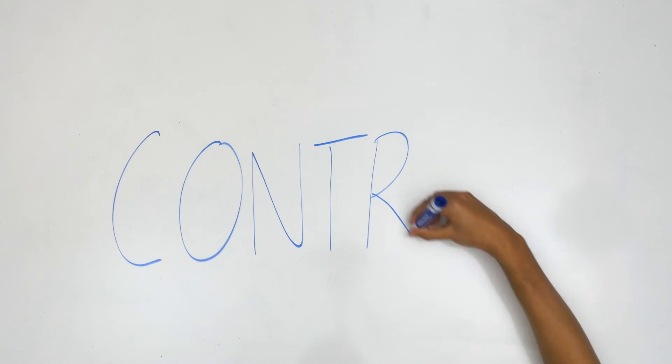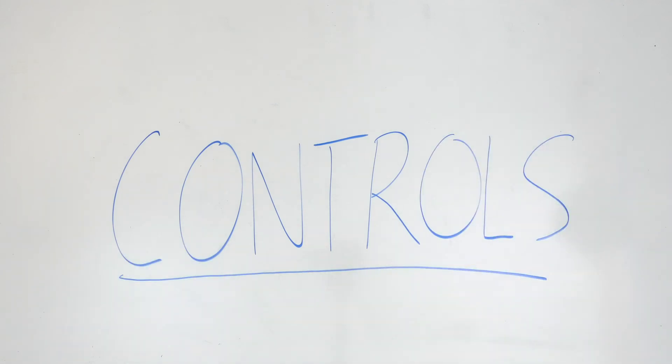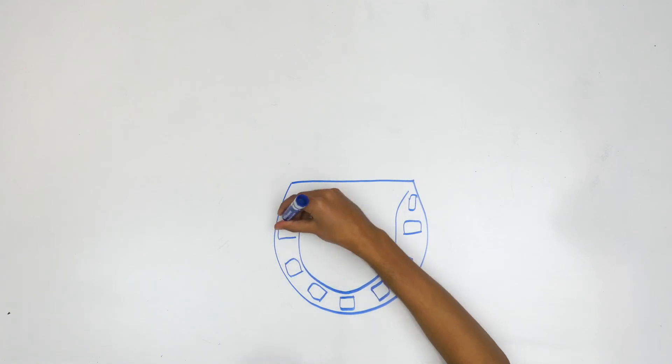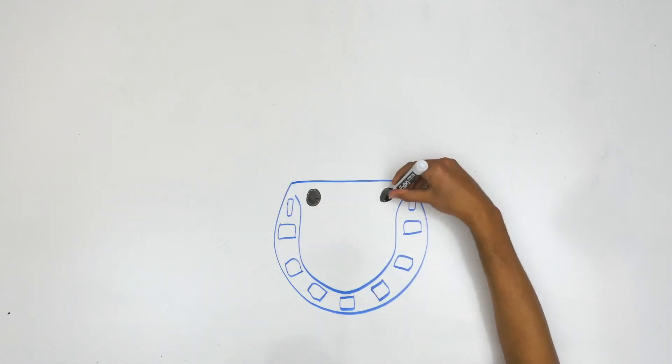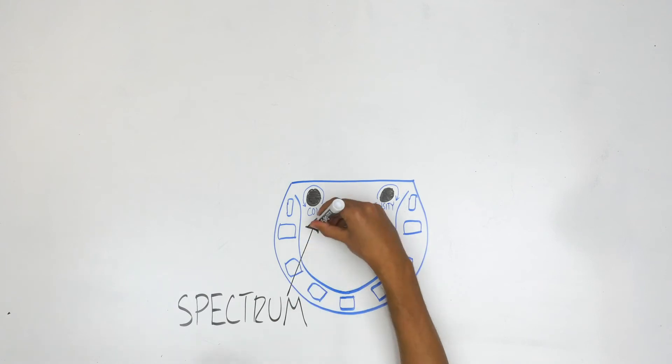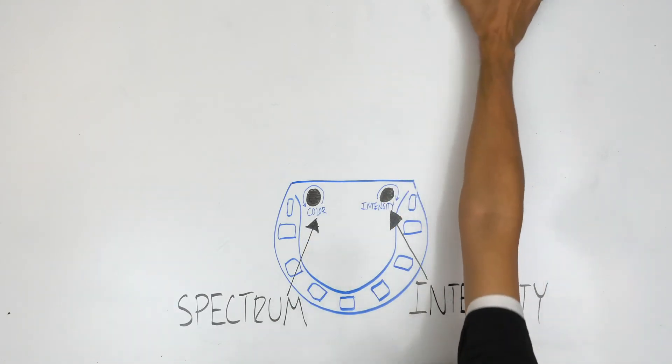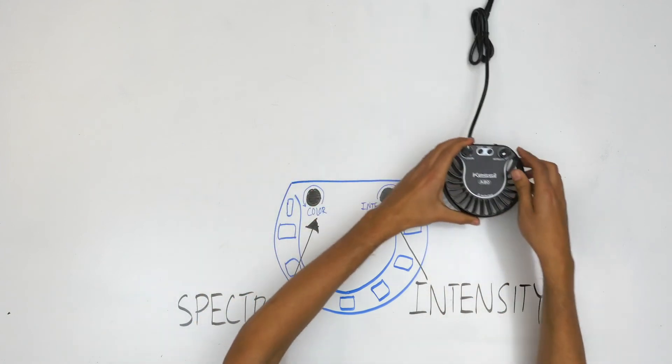Next, we'll talk about the Kessel control interface. This light is incredibly user-friendly. It consolidates all of its advanced technology down into just two dials, one for spectrum and one for intensity. Kessel lights only need these two dials because Kessel logic takes care of the rest.